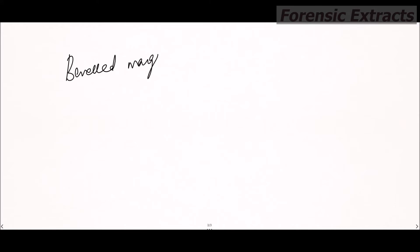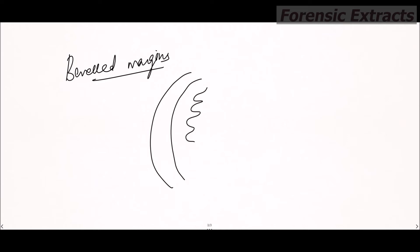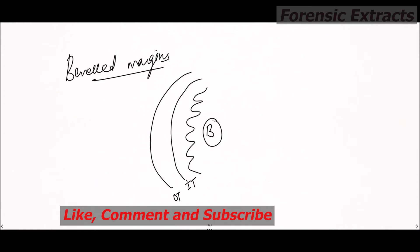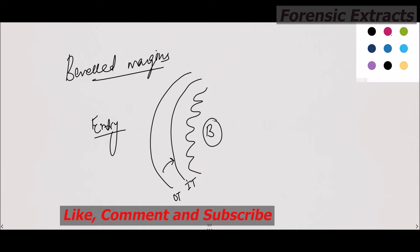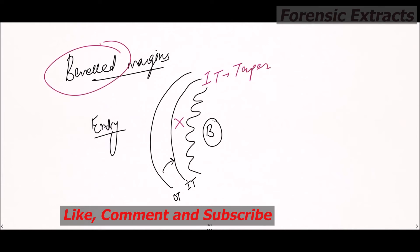Now, what is beveling? Beveled margins can be confusing for some students. There is an outer table, inner table, and brain matter. Towards the entry wound, the outer table is supported by the inner table. However, the inner table is not supported by anything — only the underlying brain is there. So at the entry wound, the inner table will have tapered or beveled margins towards the inner table on the entry side. Beveling means tapered margins seen towards the entry side at the inner table.